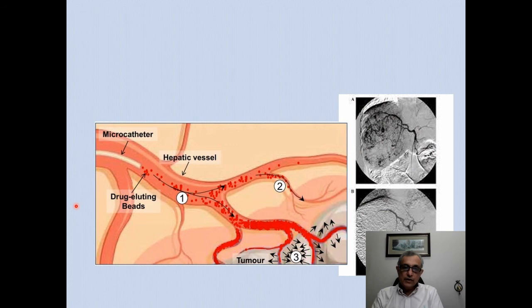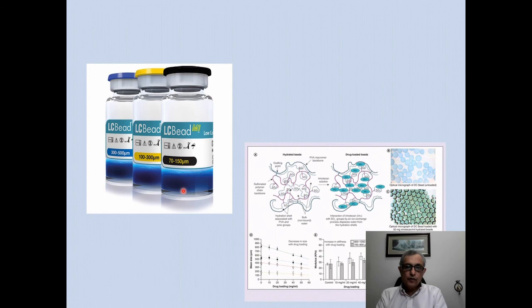Another area where interventional radiology plays a role is chemoembolization. Catheters are placed into the vessel as close to the tumor as possible, and drug-eluting beads or other chemicals are injected to kill the tumor. Here is a patient with a large tumor in the right lobe of the liver — through a catheter placed in the right hepatic artery, the tumor was embolized using Lipiodol laden with chemotherapy. A variety of commercially available particles of different sizes and chemical compositions can carry different chemotherapeutic agents, and some particles are permanent while others are biodegradable.